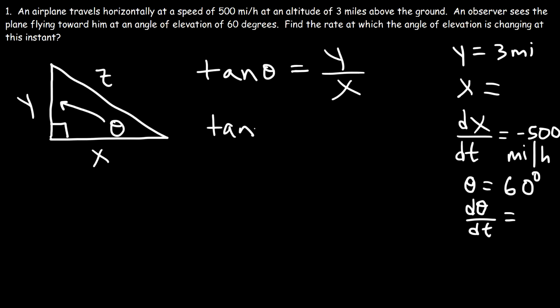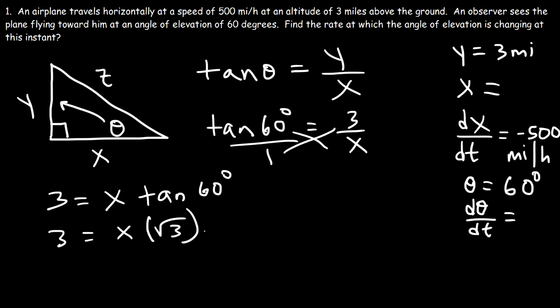So tangent of 60 degrees, theta is 60, is equal to 3 divided by x. Now let's cross multiply. So this is going to be 3 and that's equal to x times tan(60). Tangent of 60 degrees is the square root of 3. You could type that in your calculator and make sure it's in degree mode. If you don't have access to a calculator, you need to be familiar with the 30-60-90 triangle. Across the 30 is 1. Across the 60 is √3. Across the 90 is 2. So tan(60) will be opposite divided by the adjacent side. So √3 over 1, which is the square root of 3.